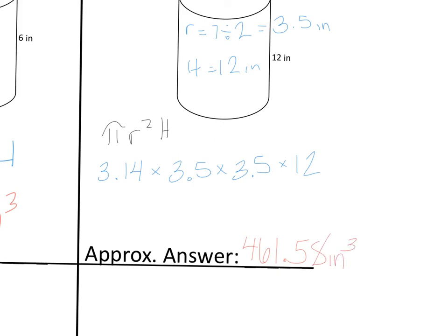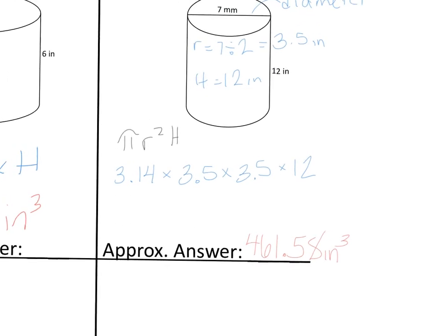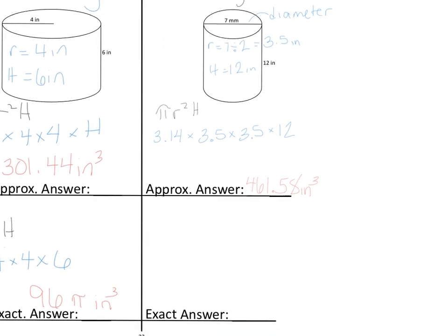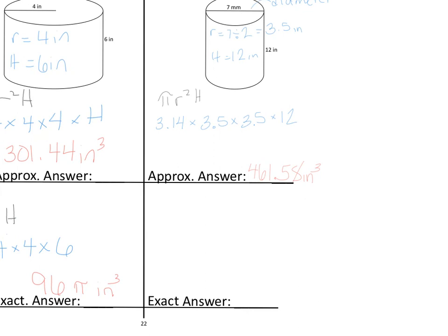Again, this is our approximate volume because we've had to estimate what pi is. We've rounded pi to 3.14. Because we've rounded, we have given an approximate answer.